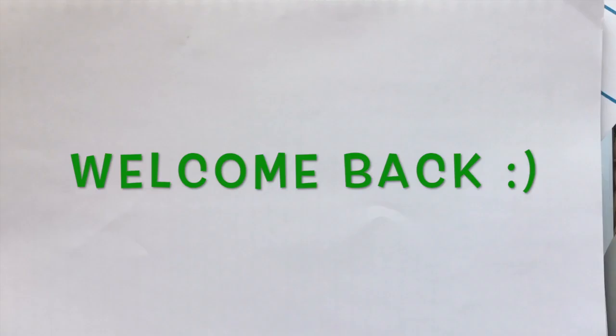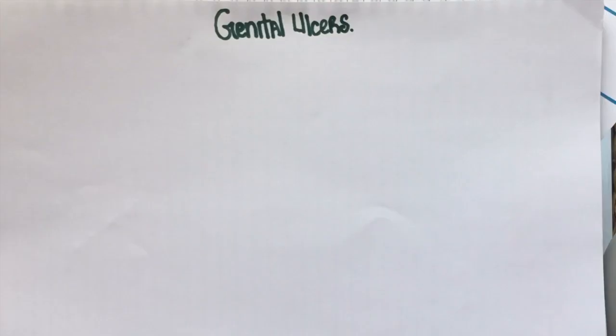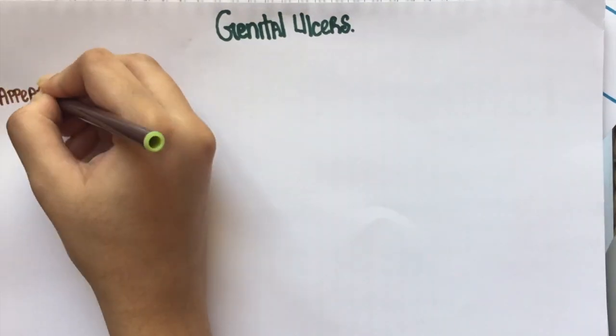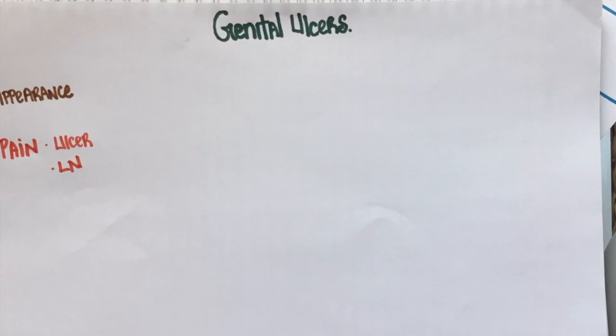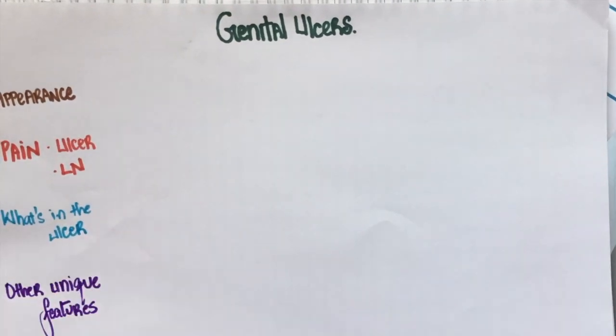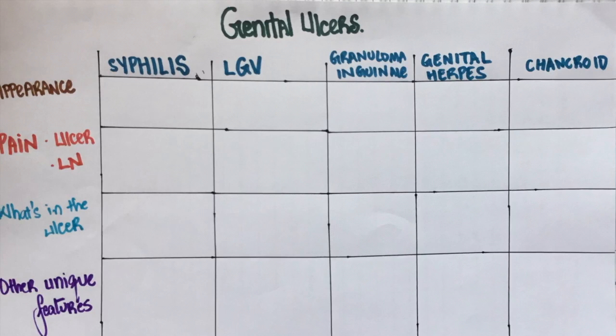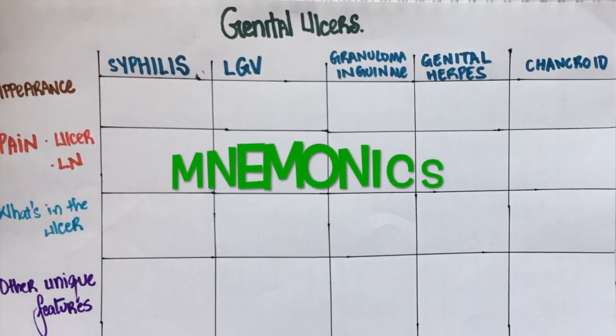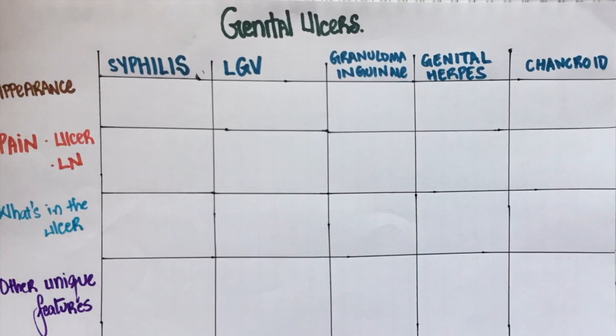Hey everyone, welcome back. In this video, I'm going to tell you how to diagnose different kinds of genital ulcers and ways to treat them. Genital ulcers can be differentiated from each other based on appearance, pain, lymph node status, and other features. By the end of this video, you'll be in a position to fill this table by yourself. I'll also share some mnemonics that I use in order to remember them. Like all my other videos, we'll learn this topic by solving questions.